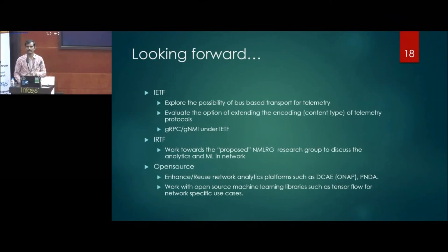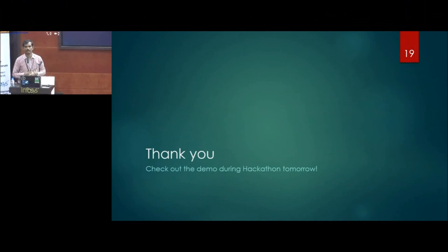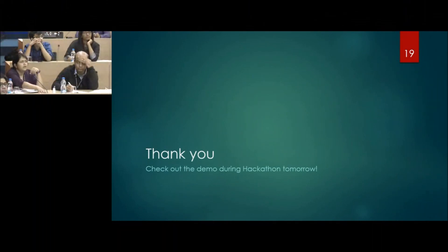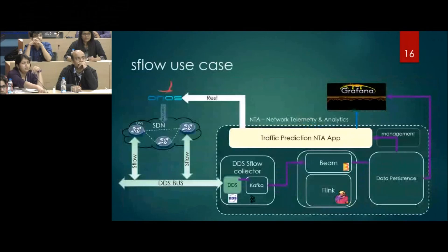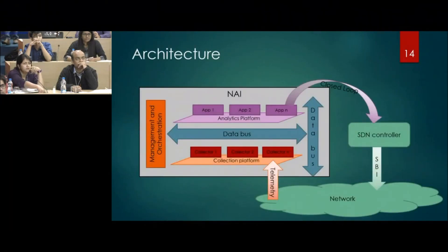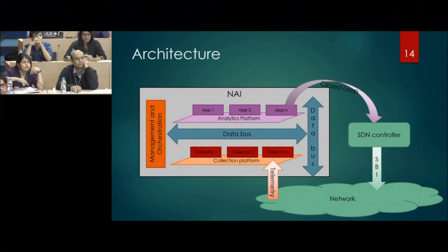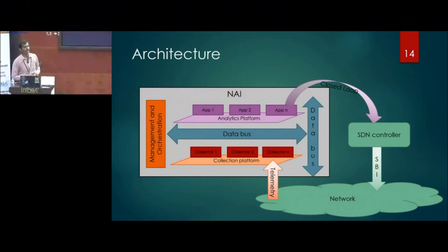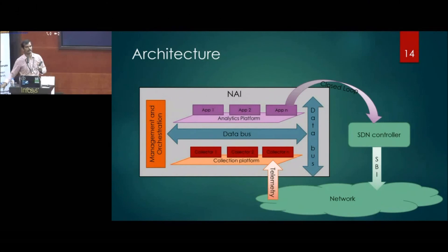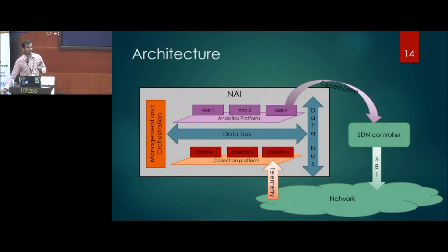Q: Can you give us an idea about the scale of resources required to realize the NAI block in your architecture? What kind of servers would you need in a real network? A: In our test network, we used a smaller setup — it is not production grade yet. For our test network, we could manage with a single server handling about a 40-node network. One server with 32 cores was sufficient to handle about a 40-node network.